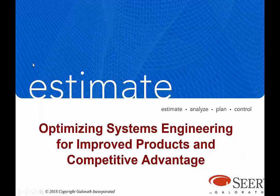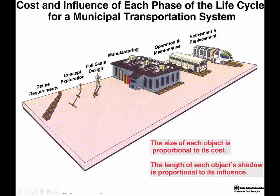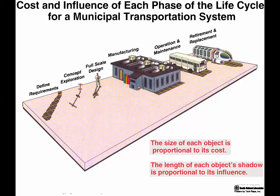The first thing I want to point you to is the connection between the phase of the life cycle and the impact that something has on cost. This is a graphic developed by Sandia National Labs which clearly illustrates that as you move from left to right, the proportional size of these elements is representative of its cost. What's important is the length of the shadow — at the beginning when you're defining requirements or trading between solutions, you're making huge, important decisions, and that's when you would use a cost model to help support those decisions.